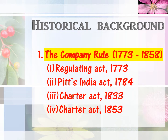The historical background can be divided into two rules. The first is the Company's Rule from 1773 to 1858, and the second is the Crown Rule from 1858 to 1947, at which independence was obtained. The Company's Rule is divided into four parts: the Regulating Act of 1773, Pitt's India Act 1784, Charter Act 1833, and Charter Act 1853. This whole Company's Rule will be discussed in detail in this video.